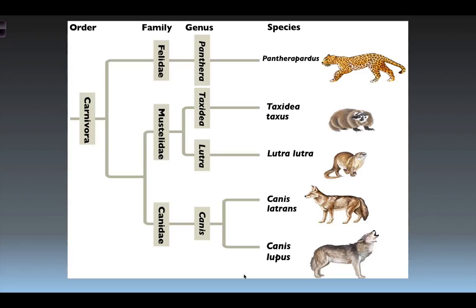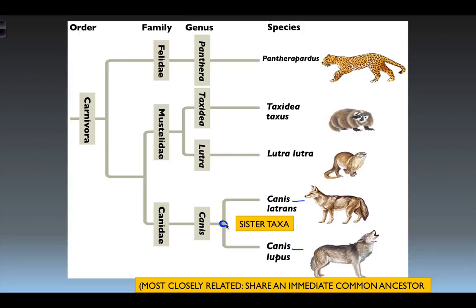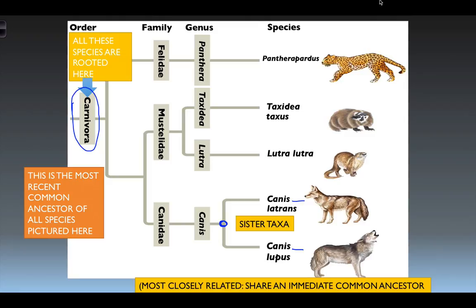Looking at another phylogenetic tree, we can pull out information like sister taxa — two very closely related species. Canis latrans and Canis lupus — the coyote and the gray wolf — are sister taxa. Their common ancestor was the last known branching point that allowed latrans to differ from lupus such that they no longer interbreed. All species on this phylogenetic tree are rooted at the base in order Carnivora, meaning they all eat meat.